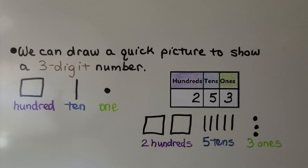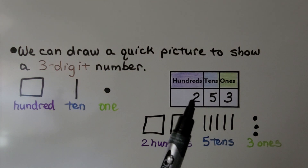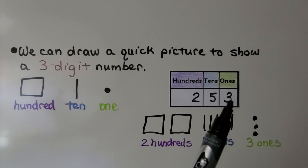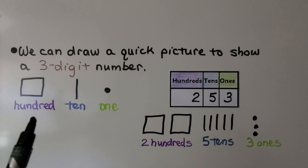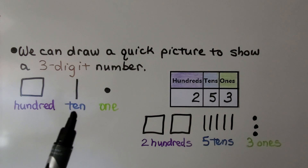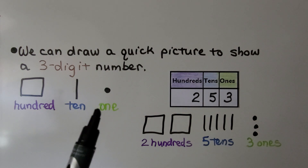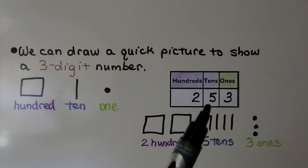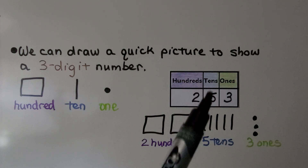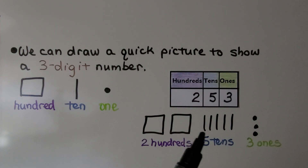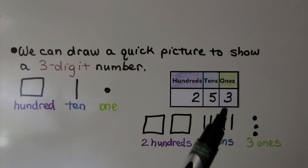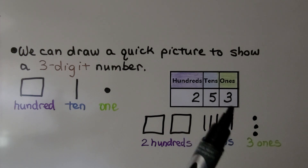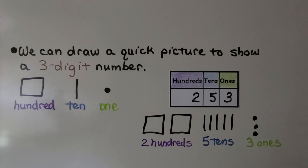We can draw a quick picture to show a three-digit number. Here our number is 253. We make a square for hundred, a line for ten, and a dot for one. We have 200, so we make two squares. We have five in the tens place, so we make five tens. And we have three, so we put three dots for three ones.